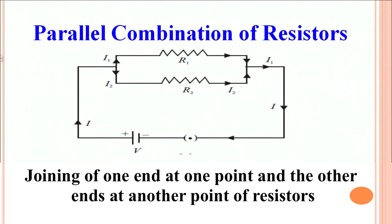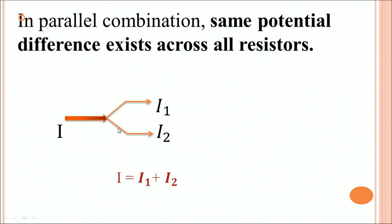If a potential drop V is applied, it causes a total current I to flow. When current reaches the junction, it branches into two paths through the two resistances. Since the resistors have different values, currents I1 through R1 and I2 through R2 will be different. In a parallel combination, the same potential difference exists across all resistors, and the current divides: I = I1 + I2.